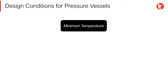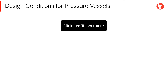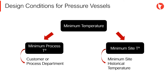The minimum temperature at which the pressure vessel will operate is the minimum value of: first, the minimum temperature provided by the customer or the process department; and second, the minimum temperature of the site, which is determined based on historical data.